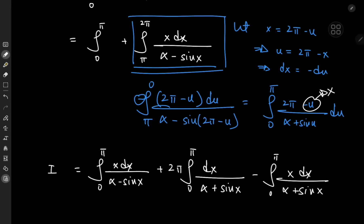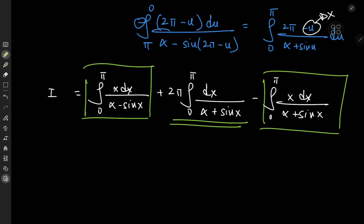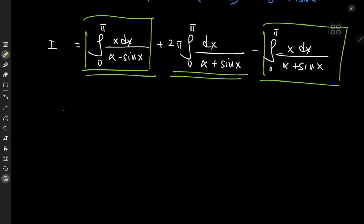We now have three integrals to evaluate, but it's not an overcomplication because their structures are pretty similar. For the plan, we take the integral from 0 to π of x dx divided by (α - sin x), call it I₁, and evaluate it. This can be evaluated quite nicely using a phase shift followed by a Weierstrass substitution.